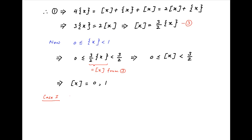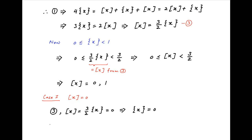Consider the first case when the integral part of x is equal to 0. From equation 3, the integral part of x equals 3/2 times the fractional part of x. If this equals 0, then the fractional part of x is equal to 0. Therefore, x — which equals the integral part of x plus the fractional part of x — is equal to 0 plus 0, which is 0.